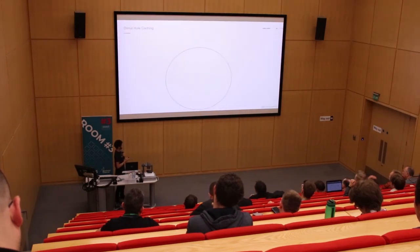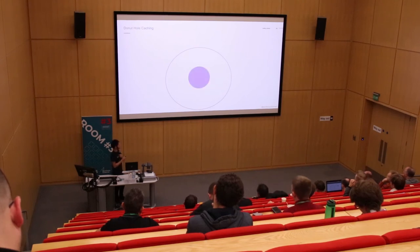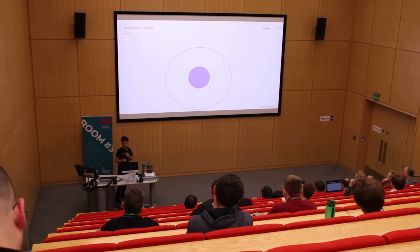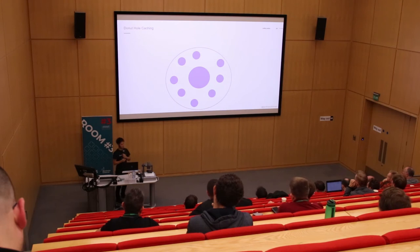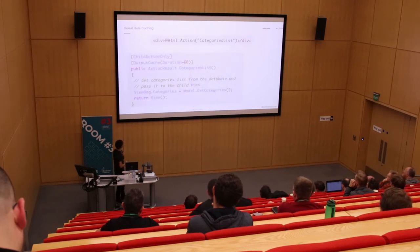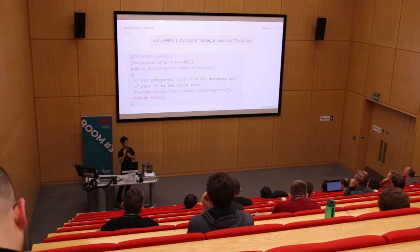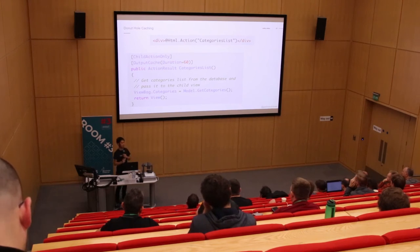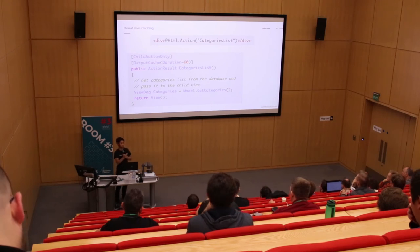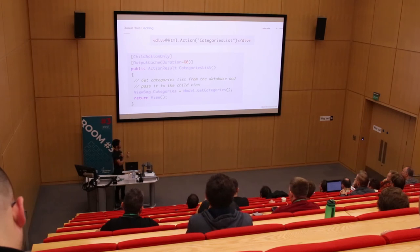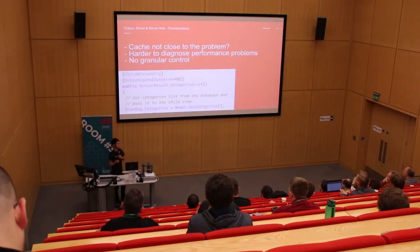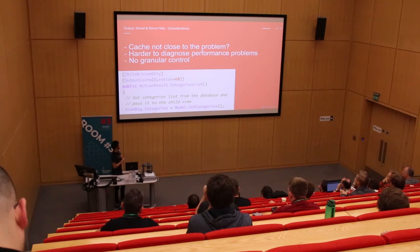Donut hole caching is the opposite. You're not caching everything - you're specifically caching some things throughout your application, using output caching only at an action level, caching bits on the page. I prefer this method because I would rather cache nothing and then be forced to cache something when I realize it's slow. But again, this is not really close to the problem if the performance issue is deeper down in the application, and doing this type of caching actually makes it hard to figure out where those problems are.